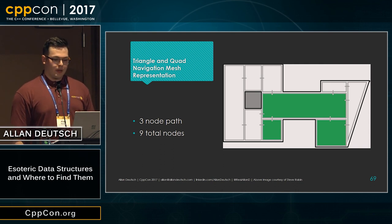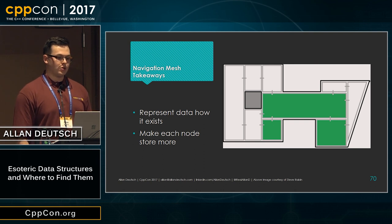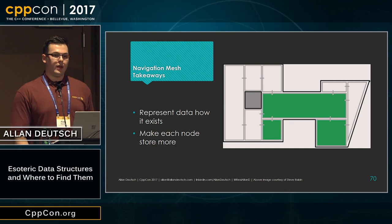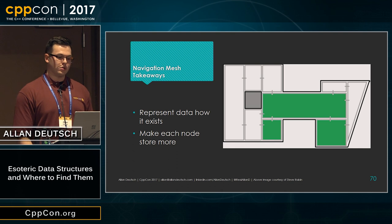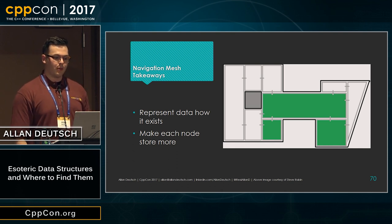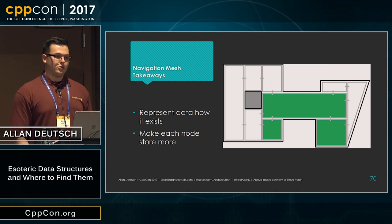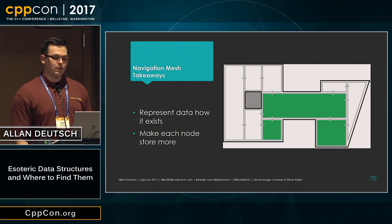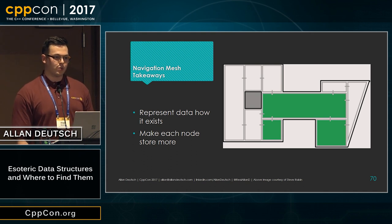The big takeaways from a navigation mesh are that it represents the data in the way that it exists better. Just because there might be a common representation for similar problems doesn't necessarily mean it's the best way to do it. In this case, we're able to make each node store a lot more data — rather than having each individual grid cell connected with all those edges, we're able to make much larger nodes that cover a big swath of area that's easily traversable with no obstacles between it.